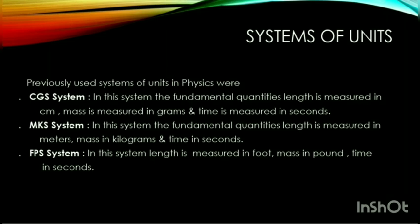In physics, previously we were using three systems of units: the CGS system, the MKS system, and the FPS system. In the CGS system, length was measured in centimeters, mass in grams, and time in seconds. In the MKS system, length was measured in meters.